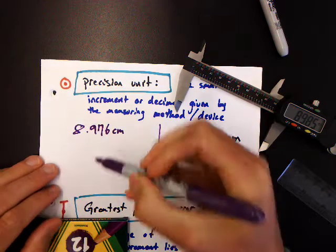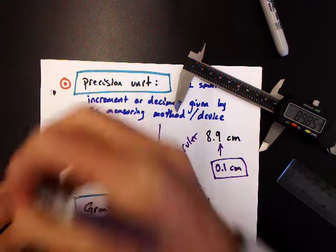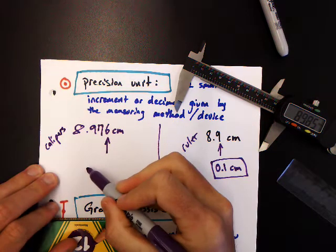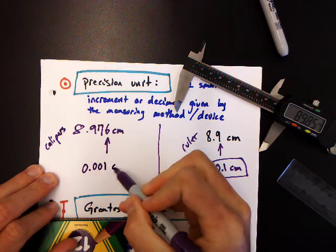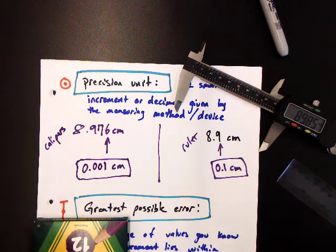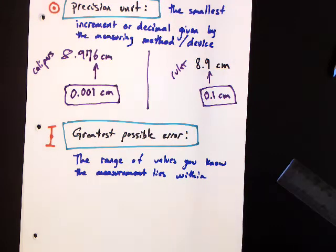So what's my precision unit? My precision unit is this smallest decimal here. These are the calipers. I get 0.001 centimeters. That's the precision unit. We can see the calipers give a lot more precision units. That's part of their value.